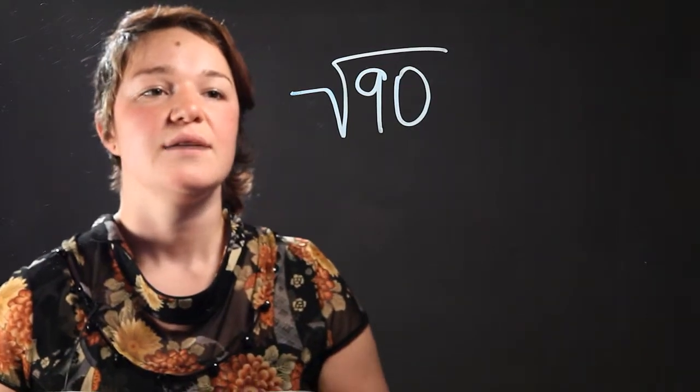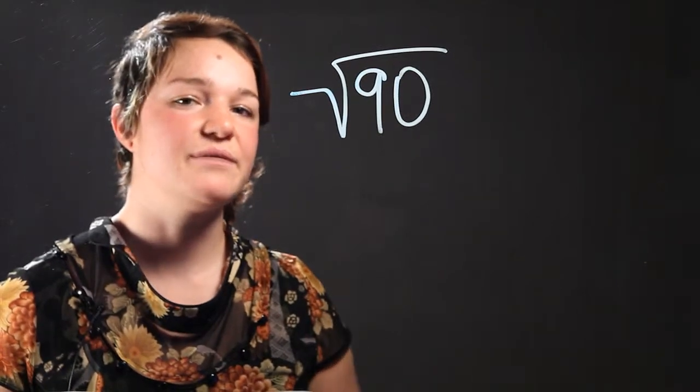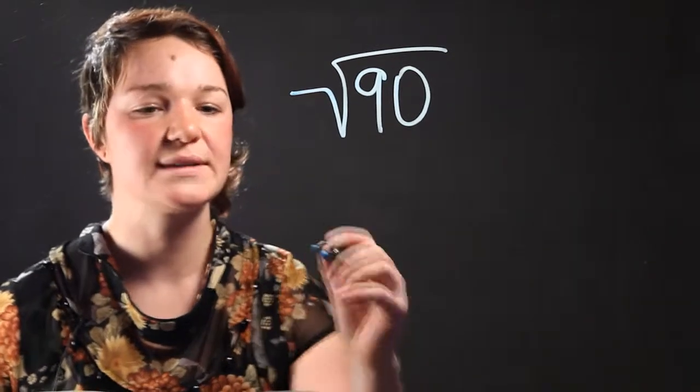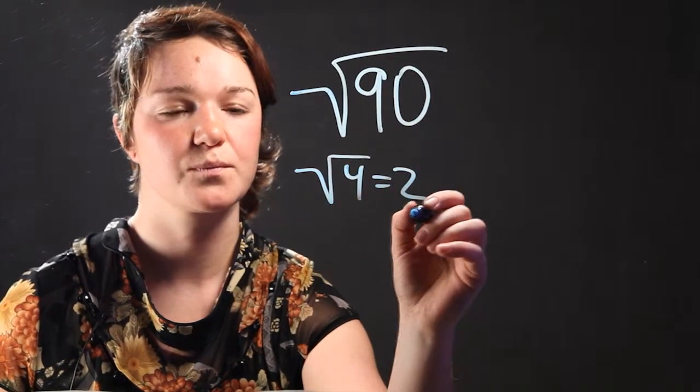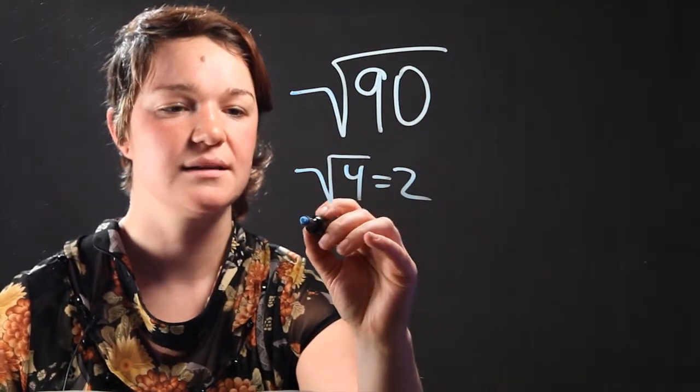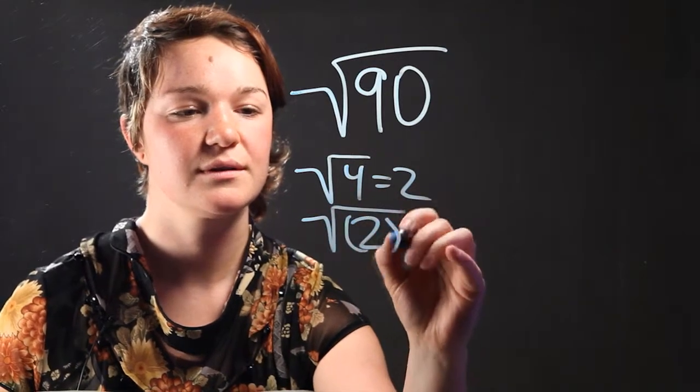So remember that what a radical means, you're taking the square root of a number. So for example, the square root of 4 is equal to 2. Well, that's because the square root of 4 is actually 2 squared.